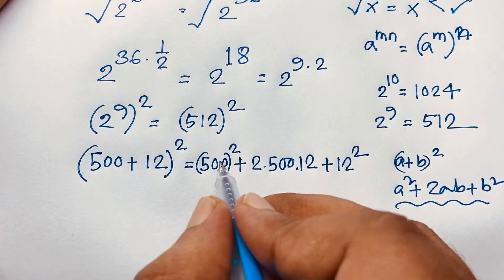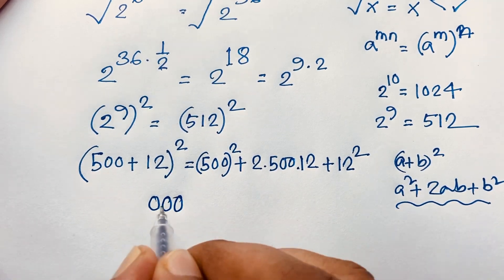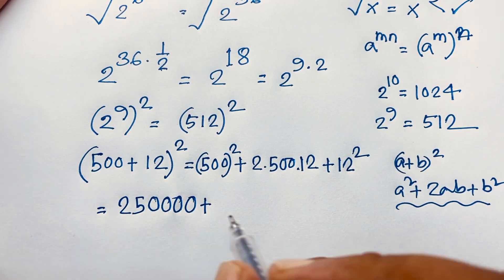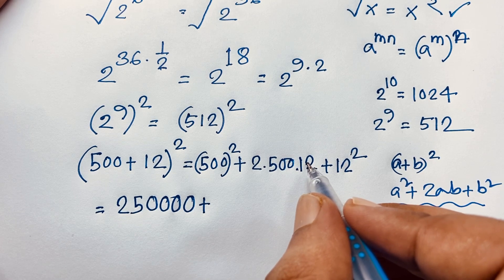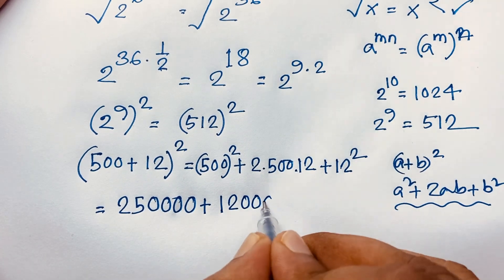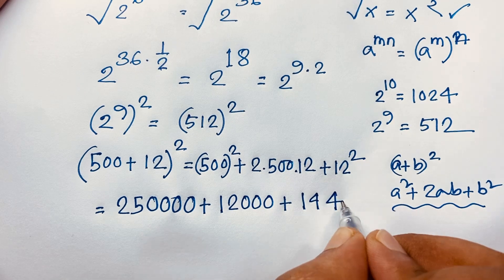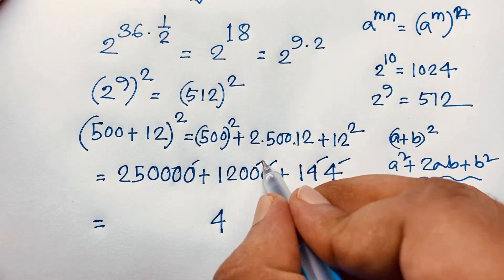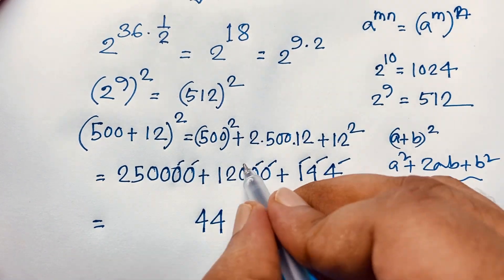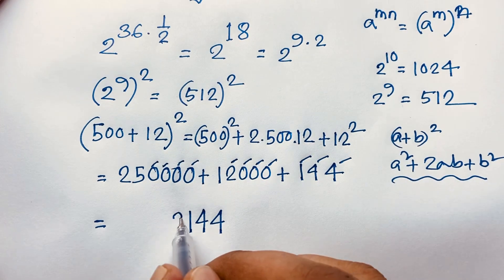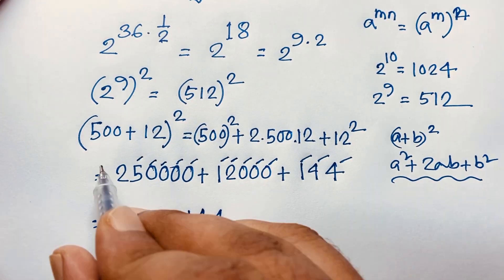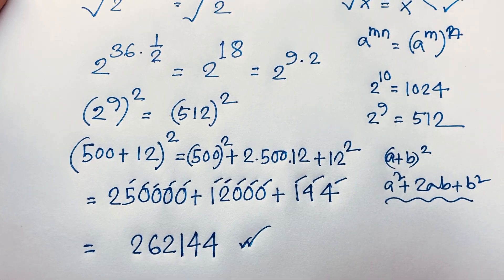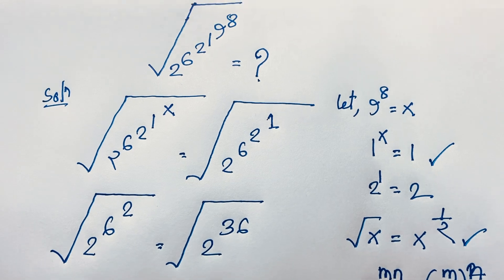Now: 500² gives us 250000. Then 2 times 12 is 24, and 24 times 500 is 12000. And 12 squared is 144. Adding these: 250000 + 12000 + 144. Working through the digits: the final answer comes to 262144. This is our final answer to this radical math problem. Thank you all — if you enjoyed this video, please subscribe to my channel for more interesting videos. Goodbye, take care!